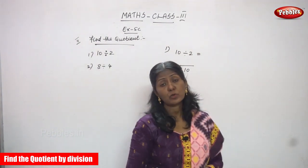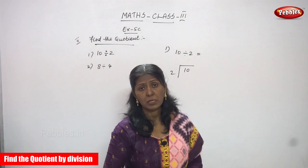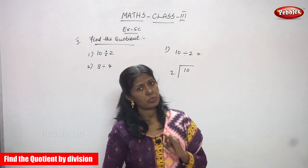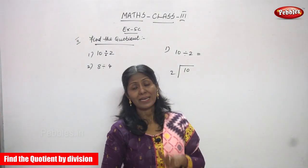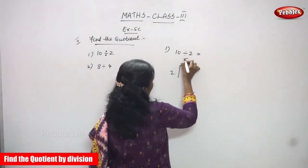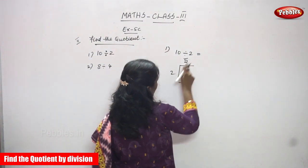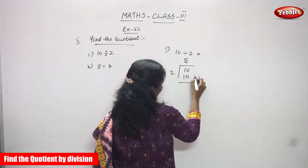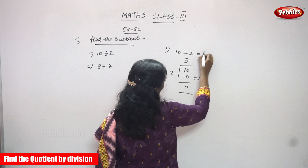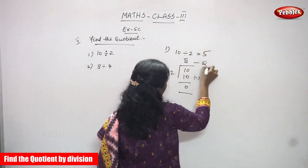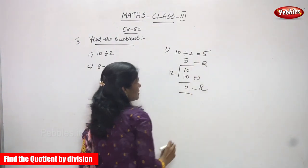1 two is 2, 2 twos are 4, 2 threes are 6, 2 fours are 8, and 2 fives are 10. So you put 5 here. 2 fives are 10, so 10 minus 10 equals 0. This is the quotient and this is the remainder. The answer is 5. The quotient is 5.